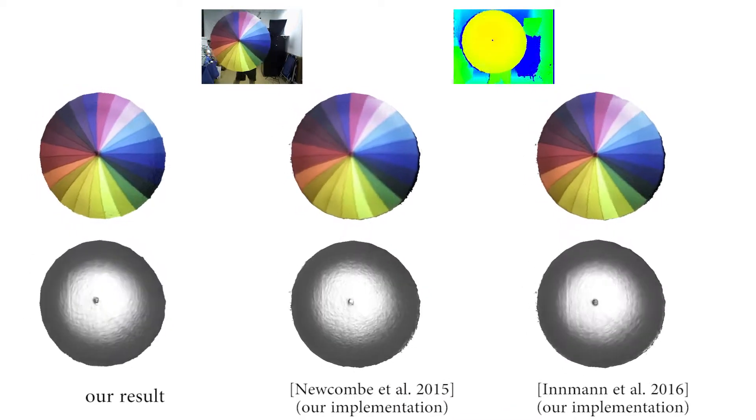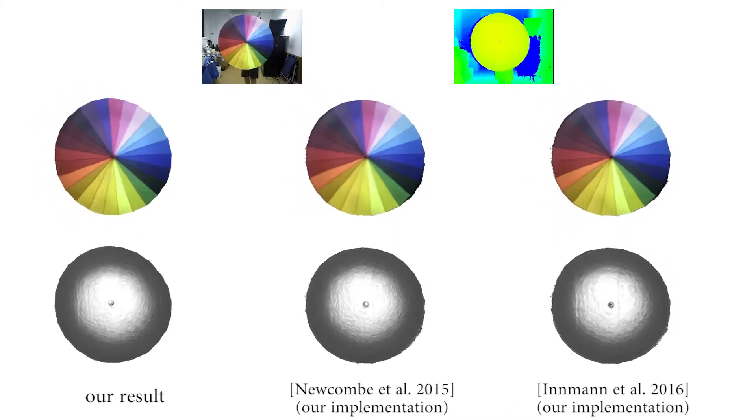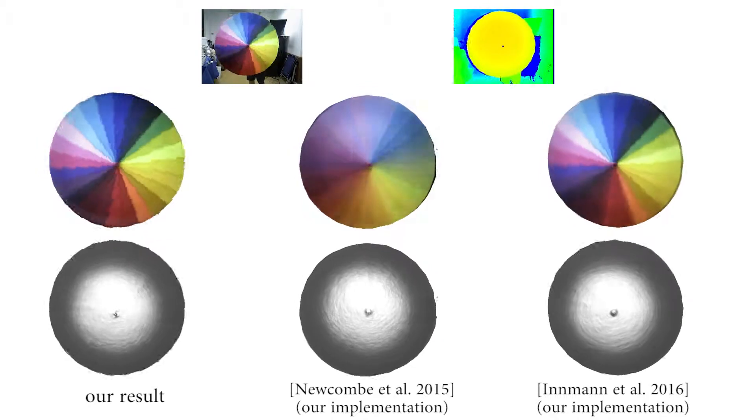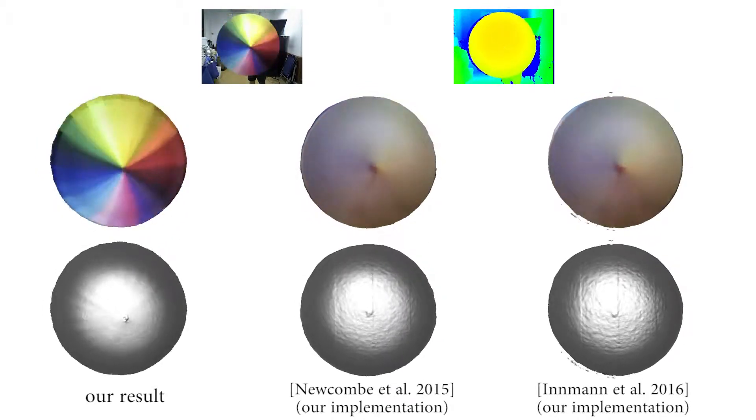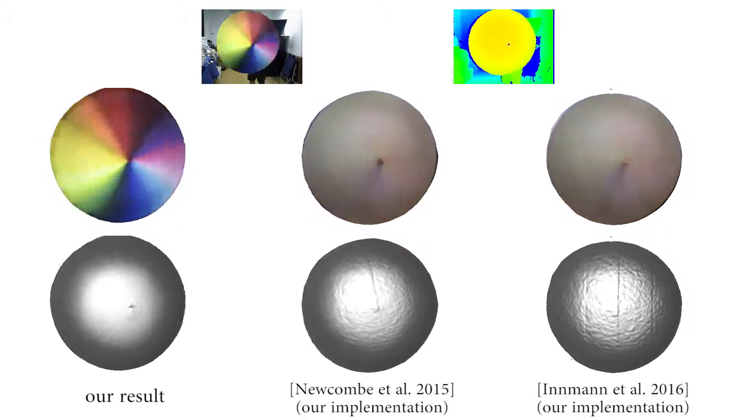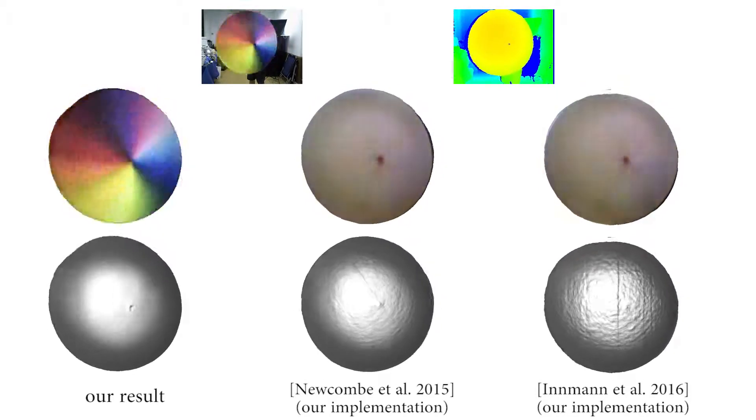It is difficult to detect geometry or SIFT feature correspondences. Therefore, both of their methods fail in tracking this motion. In contrast, our method utilizes dense shading cues, thus successfully tracking this challenging motion.